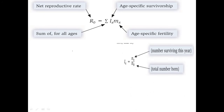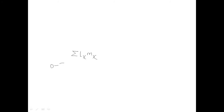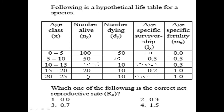Now R₀, the reproductive rate, equals the summation of Lx × Mx. We multiply the Lx value and the Mx value for each age group and then add all the products together. For the 0–5 age class, Lx × Mx equals 1.0 × 0 = 0. For the 5–10 age class, it is 0.5 × 0.5 = 0.25.